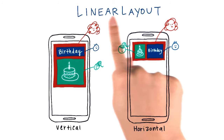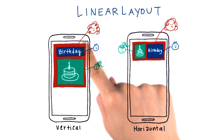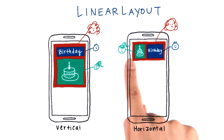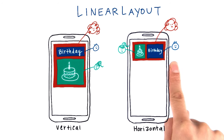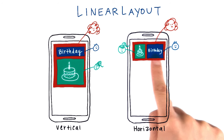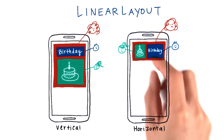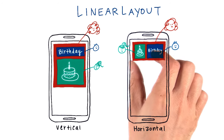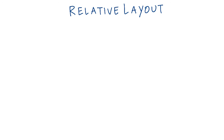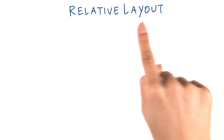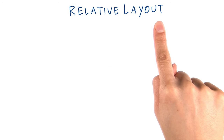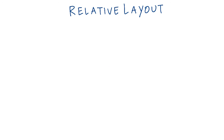So far, we've learned that a linear layout can have a vertical orientation or horizontal orientation. We also learned that individual views can have weight values to fill up the extra space in the parent. Now we're going to spend some time learning more about the relative layout view group. This will help you build even more flexible layouts.